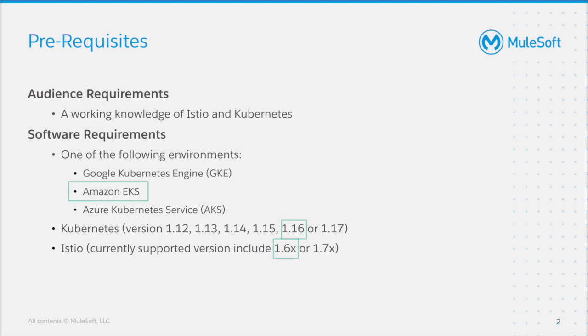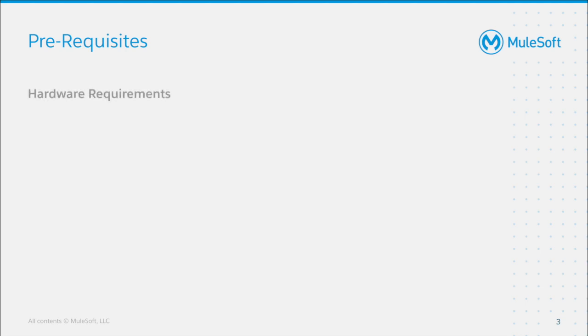In this demo, we're going to use Amazon EKS, Kubernetes 1.16, and Istio 1.6. In terms of hardware requirements, you'll need to have an instance with four cores and eight gigabytes of memory. In this demo, we're using one M5.xlarge EC2 instance.